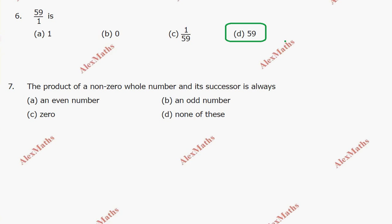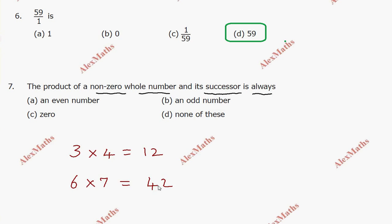Question number 7: the product of a non-zero whole number and its successor. For example, 3 and its successor 4: 3 times 4 equals 12. Number 6 and its successor 7: 6 times 7 equals 42. These products — 12 and 42 — are even numbers. So the product of a non-zero whole number and its successor is always even.